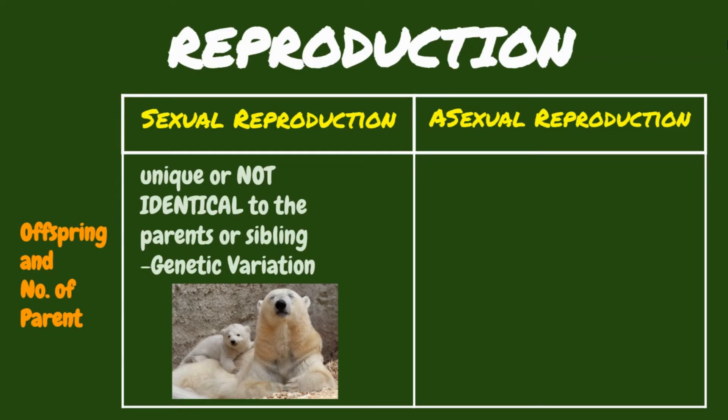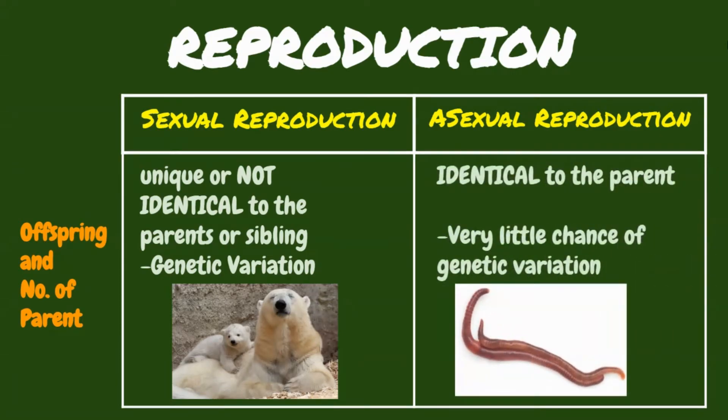Asexual reproduction occurs when only one parent is involved in making a new creature. Since there is only one parent, all the traits of that parent are passed on to the offspring. As a result, the parent and child are identical, with very little chance of variation.